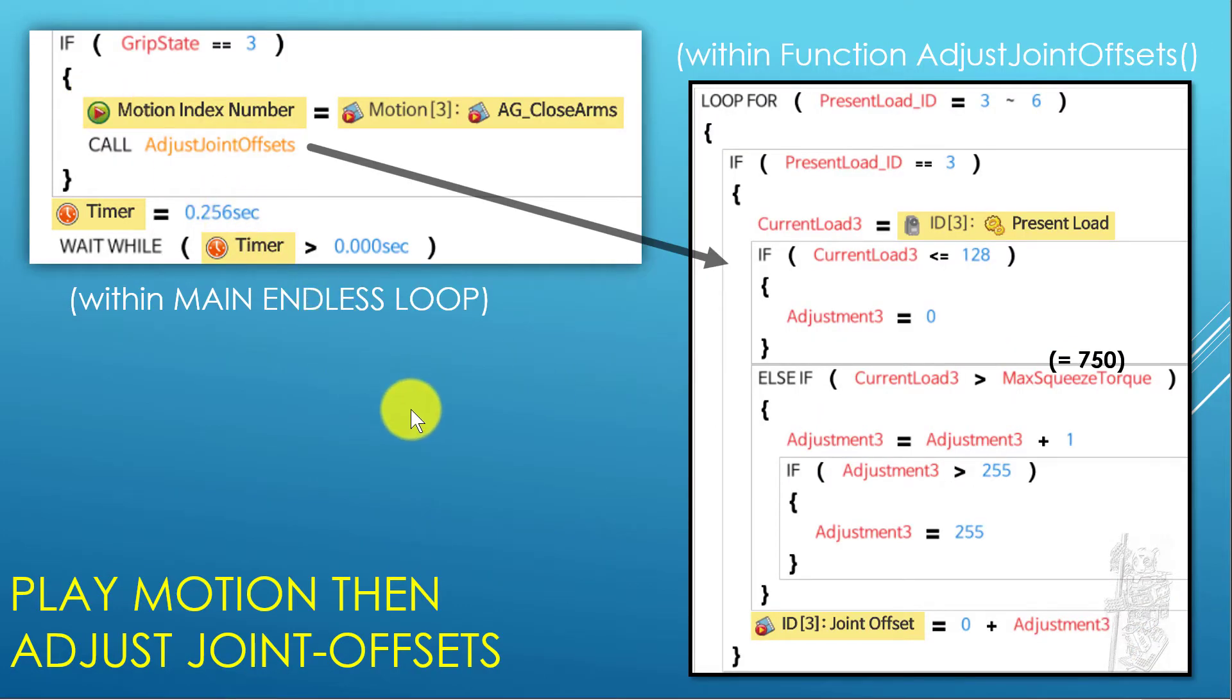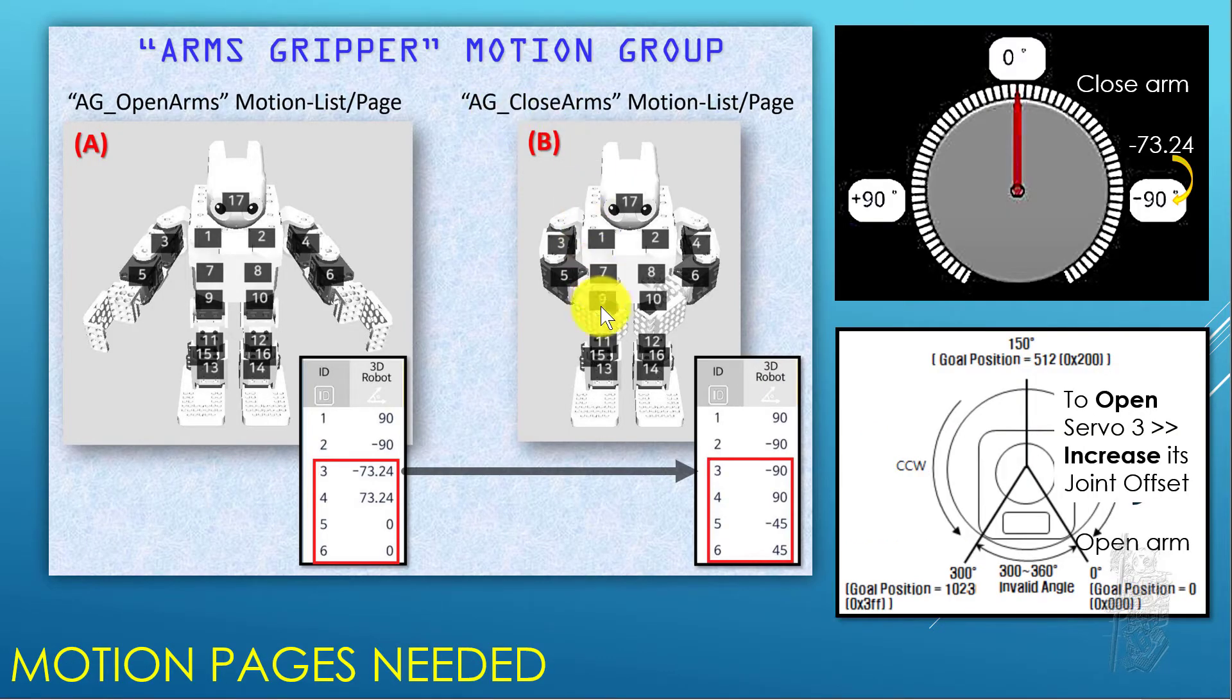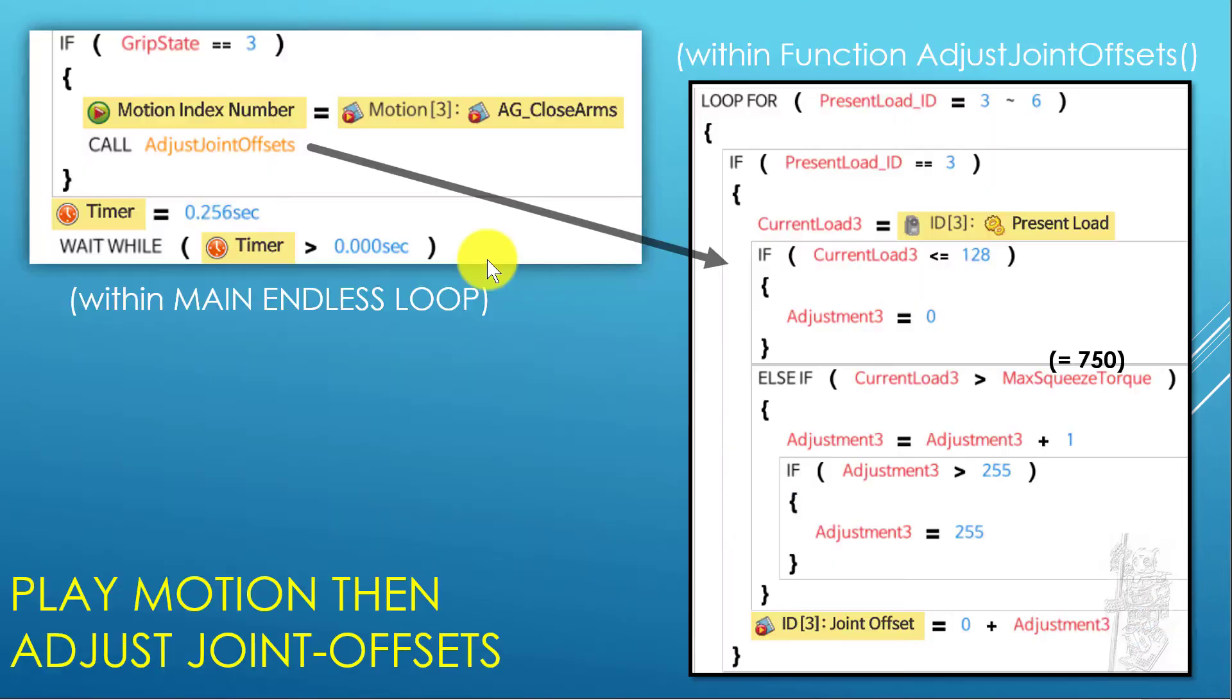In the code itself, there's a main endless loop. If the user sets the command to group 3, it will invoke closed arm and close the arm all the way to a very small position. But the key here is how can we set it up so it will work for different objects of different sizes. This closed arm position is still working for us because it's a fixed motion page, but we can adjust the joint offset so it can squeeze just enough on different size objects. That's what the adjust joint offset function does.